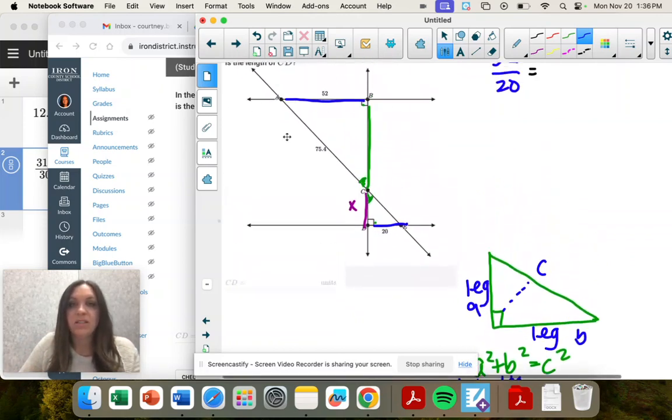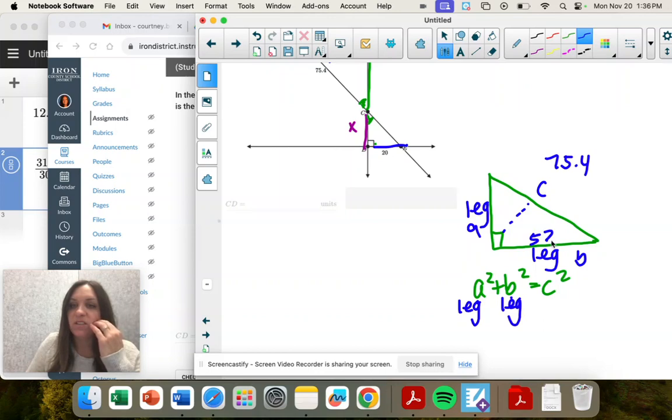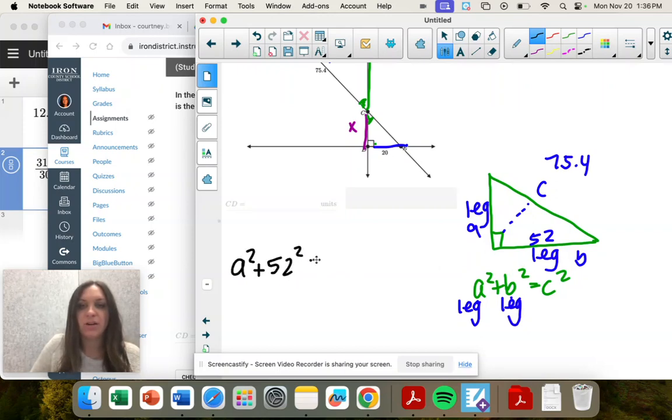So we need to solve this. So for this one, across from the right angle is our hypotenuse at 75.4. And then the other sides, it doesn't matter which one, this will be 52. So I have A squared plus B, which is 52 squared equals C squared. So 75.4 squared.